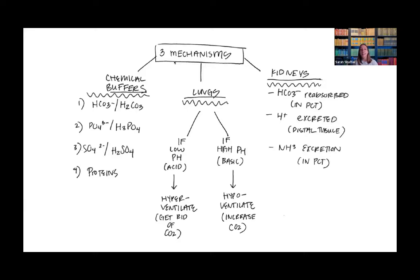The kidneys are the slowest system to respond to pH imbalances — it usually takes three to five days. They help reabsorb more bicarb and can excrete acid, but this takes quite a long time compared to the chemical buffer and lung mechanisms.